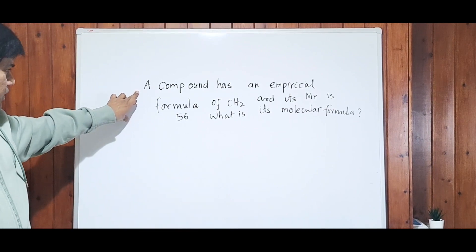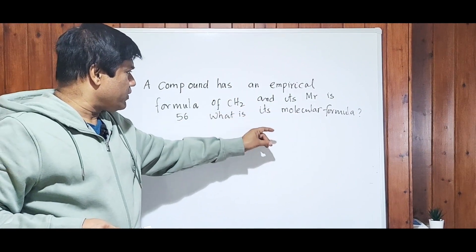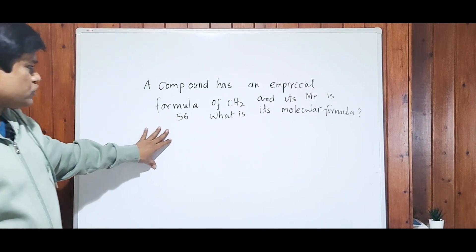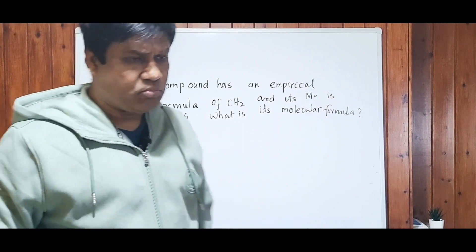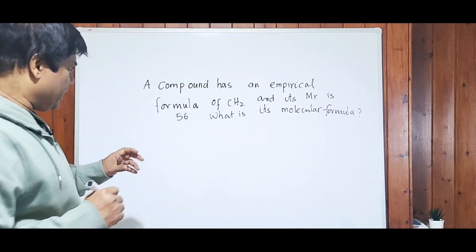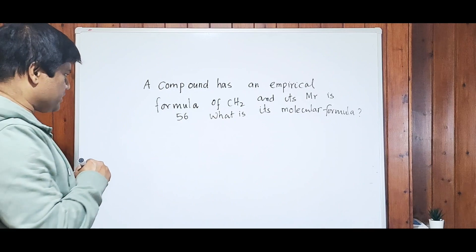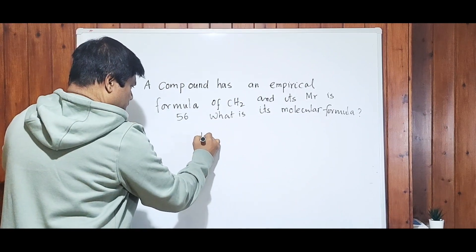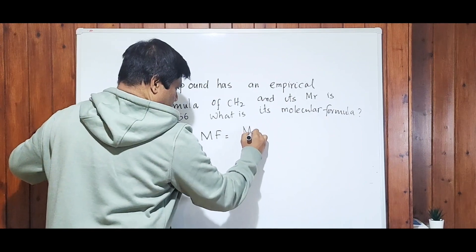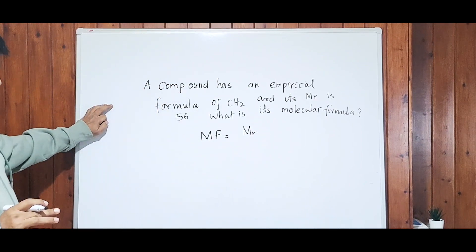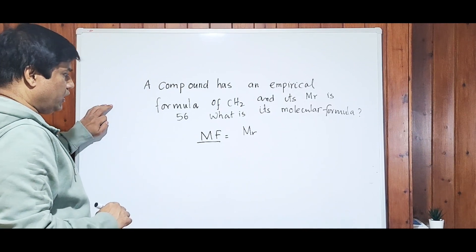A compound has an empirical formula of CH₂ and its molar mass (Mr) is 56. What is its molecular formula? Let's look at the relationship between the molecular formula and the empirical formula. The formula is: molecular formula (MF) = Mr from the molecular formula divided by the empirical formula mass.